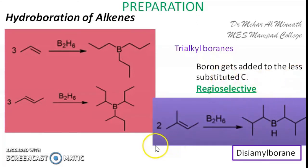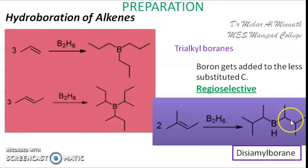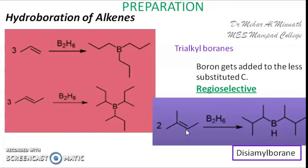Here we have another example wherein we are getting dialkyl borane. This is dicyamyl borane. Here you are getting dialkyl borane because the alkene we are using, trimethylethylene, is bulky in nature. We also have monoalkyl borane using a still bulkier alkene. Dicyamyl borane is used for hydroboration-oxidation reactions of terminal alkenes and alkynes to give aldehydes.